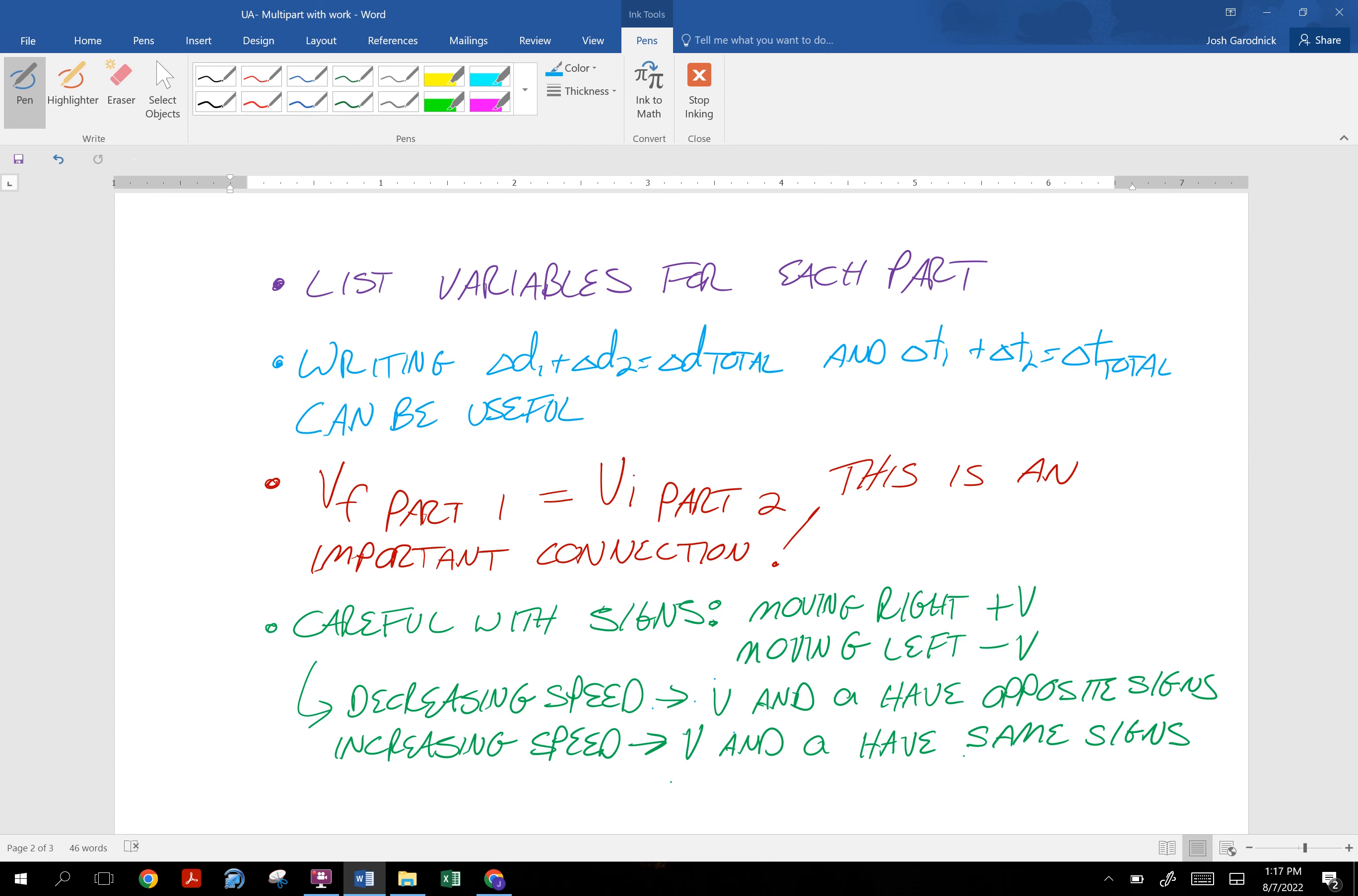So list variables for each part. Writing out the sum of the distances is the total and sum of the times is total time can be useful. The most important thing is that the final velocity of part one becomes the initial for part two. And that can go backwards. Maybe you're working backwards through the problem and you're trying to find the acceleration in part one.